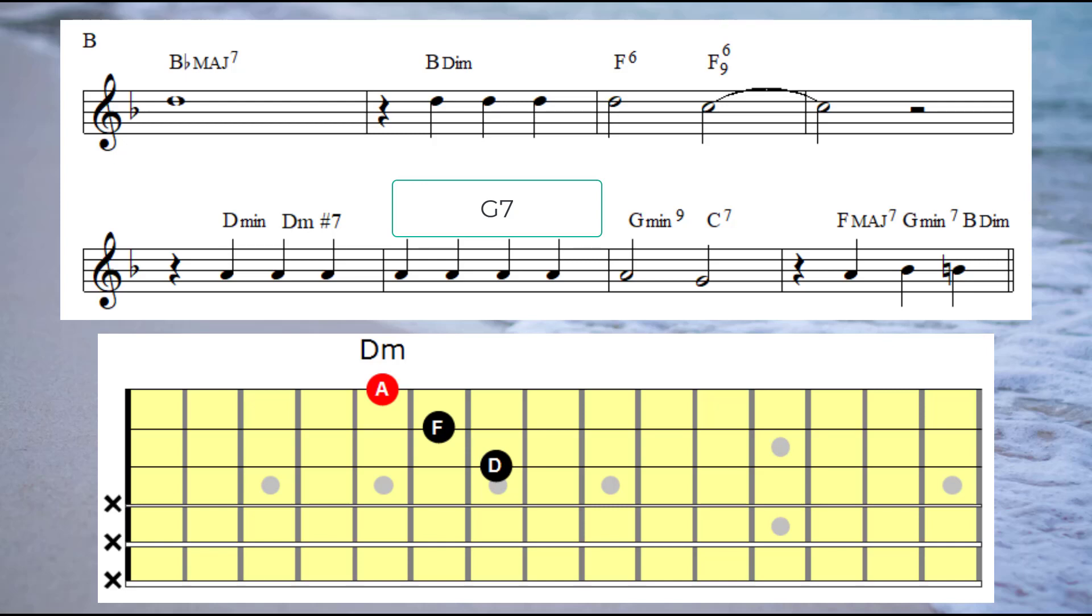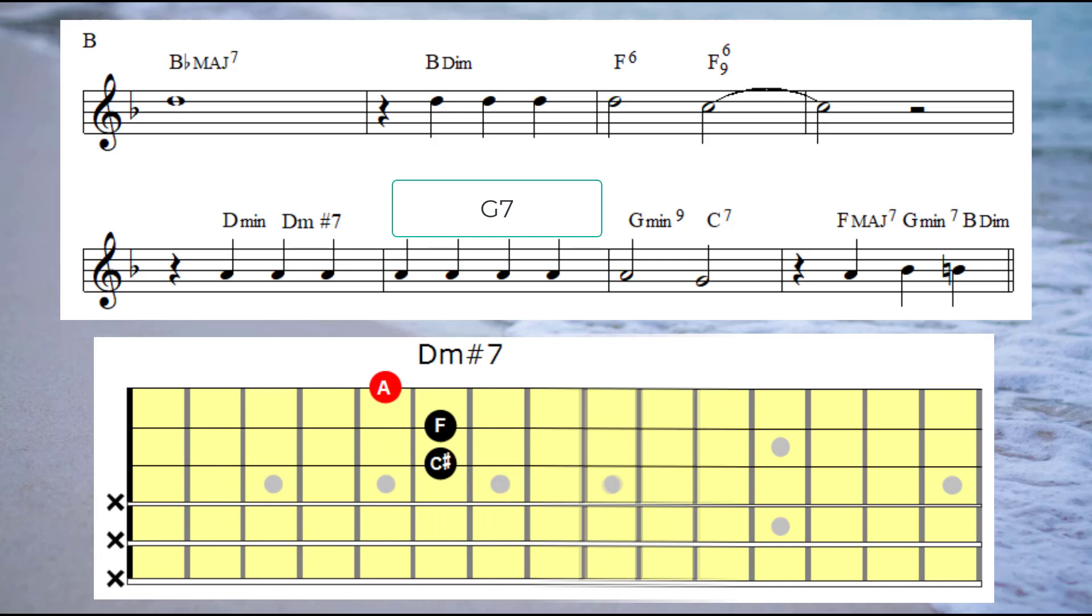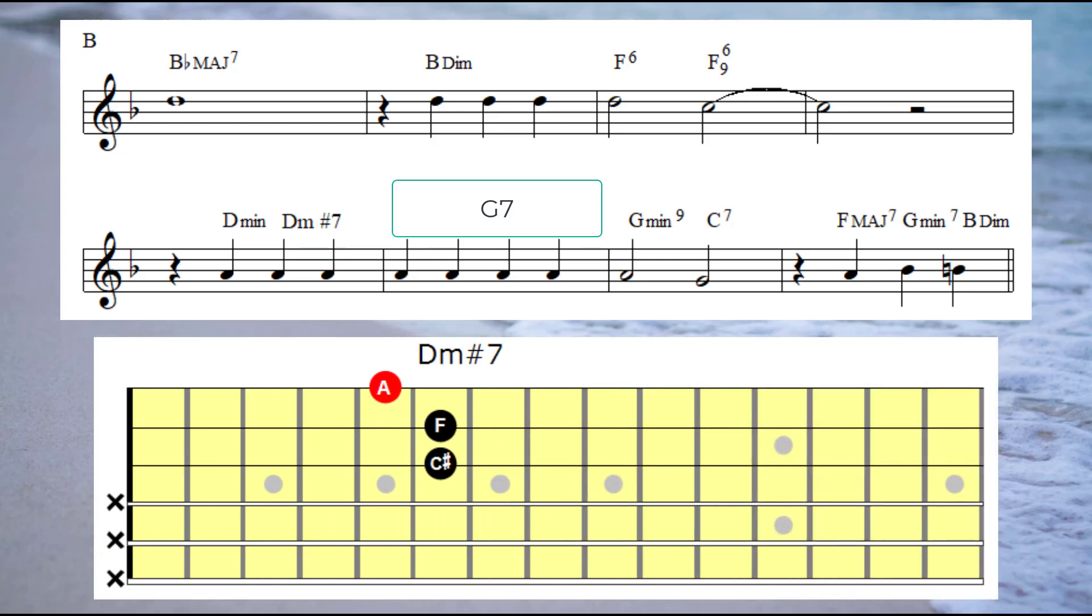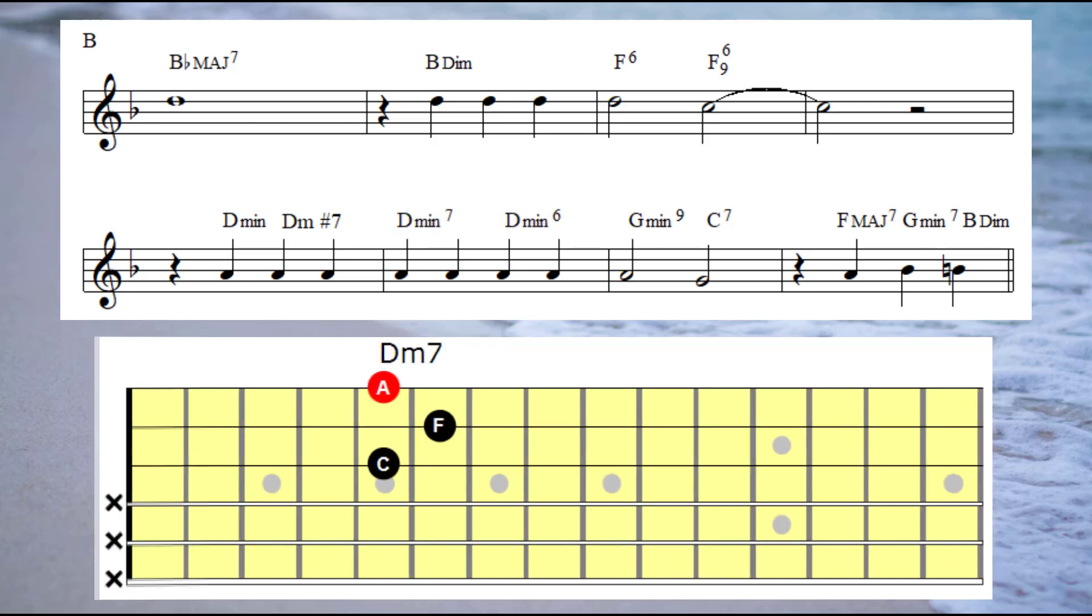So we have a rest on the first beat in bar five, then we have a D minor chord played under the A note. Then the next chord is a D minor with a sharp seven, or D minor with a major seventh, however you like to think about that.